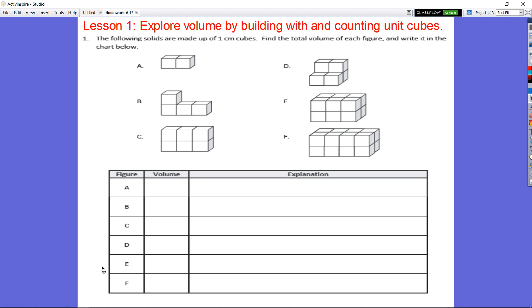So let's take a look. It says the following solids are made up of one centimeter cubes. Find the total volume for each figure and write it in a chart below. So let's see. We know that these are one centimeter cubes. So I have one centimeter, two centimeter cubes there. For A, I know that it's going to be written as two cubic centimeters or two centimeters cubed. And you can just say one, two. I counted the cubes.